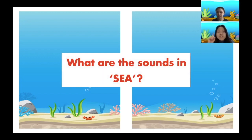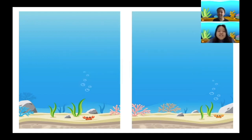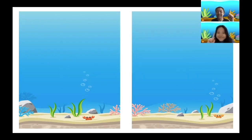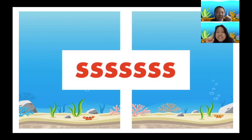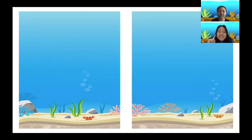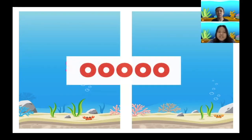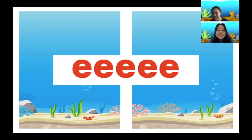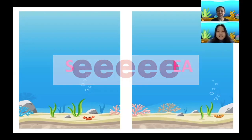This word 'sea' has two sounds. Good idea, Joyce! The first sound is the slithery snake sound — everyone, let's say it together. Yes! And now, what's the last sound in the word 'sea', kids? Is it 'ooh' or 'ee'? Yes, the last sound is the long E — everyone, let's say it together: E!